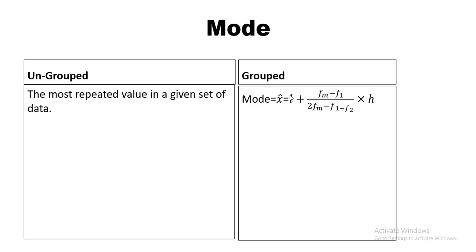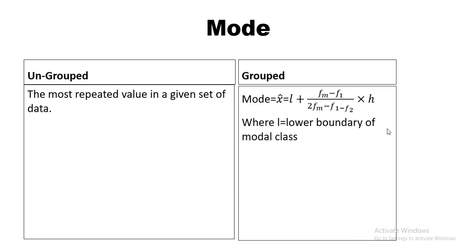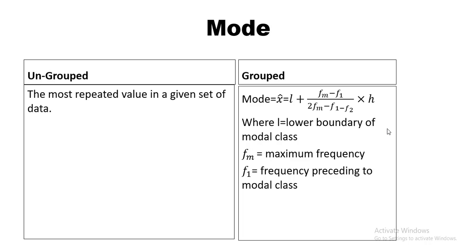For grouped frequency distribution, the formula is: Mode = L + [(Fm − F1) / (2Fm − F1 − F2)] × H. This is represented symbolically as X-hat. Here, L is the lower boundary of the modal class, Fm is the maximum frequency of the modal class, F1 is the frequency preceding the modal class, F2 is the frequency following the modal class, and H is the class height.